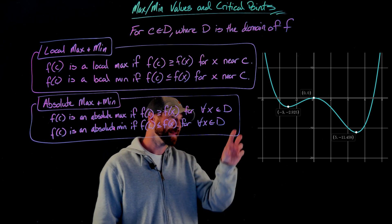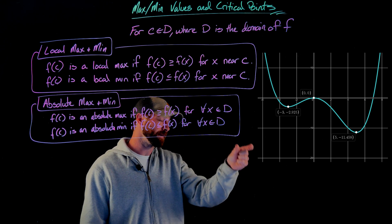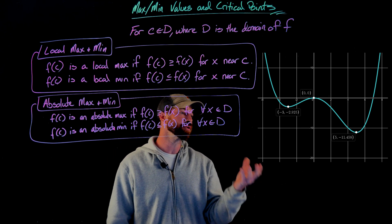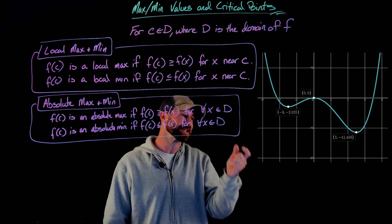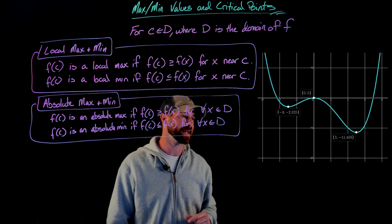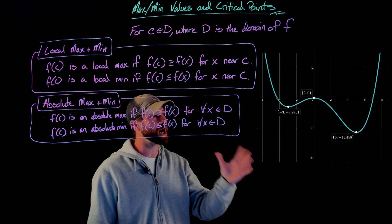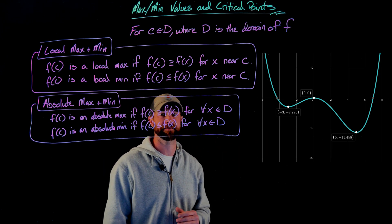And then for this function, that output at x equals 5, that value of negative 11.5, we would call that an absolute min value for this function. That is the smallest value output by this function. And it's important to note that this function actually would not have an absolute maximum value.